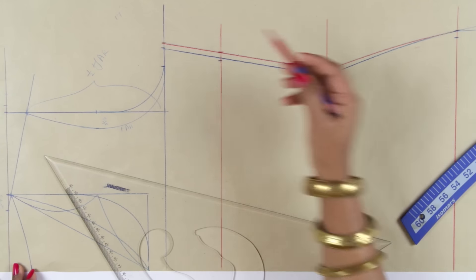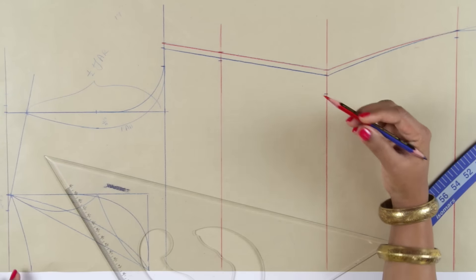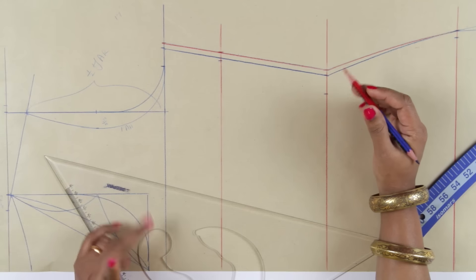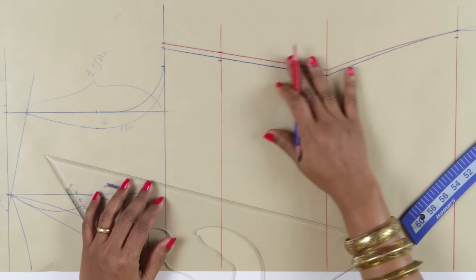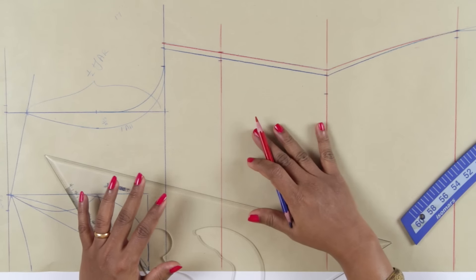Now when you increase the ease on chest line and waist line, the garment may become loose. The dress may become looser than what you wanted. In that case, you will have to cut your front and back separately.